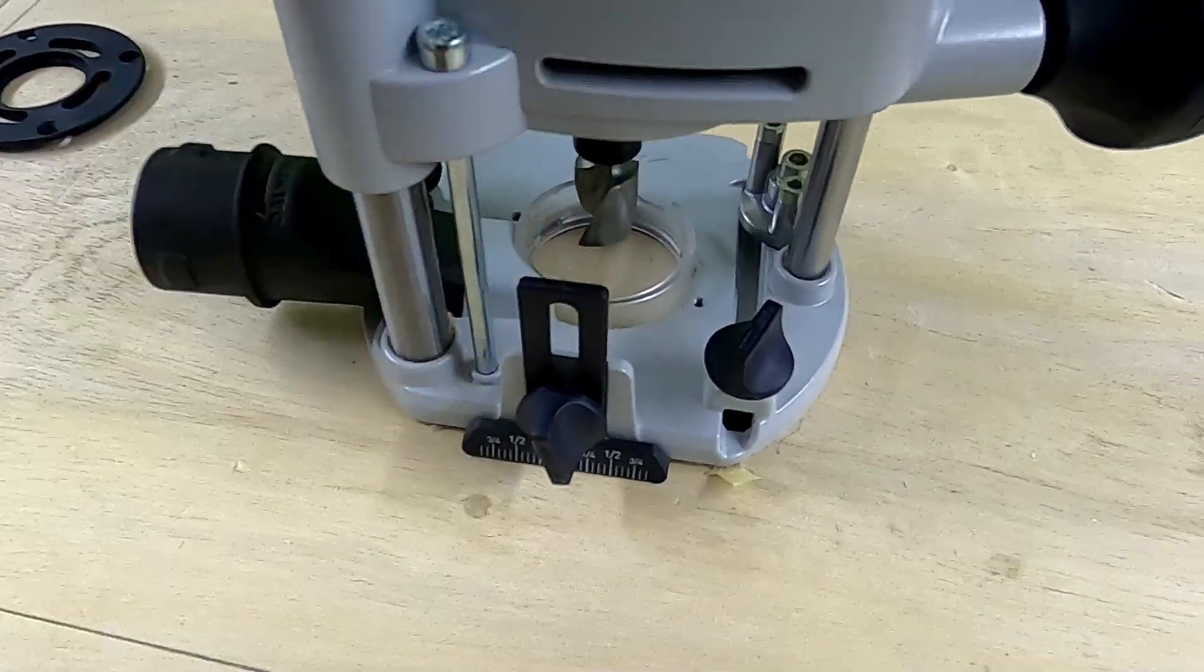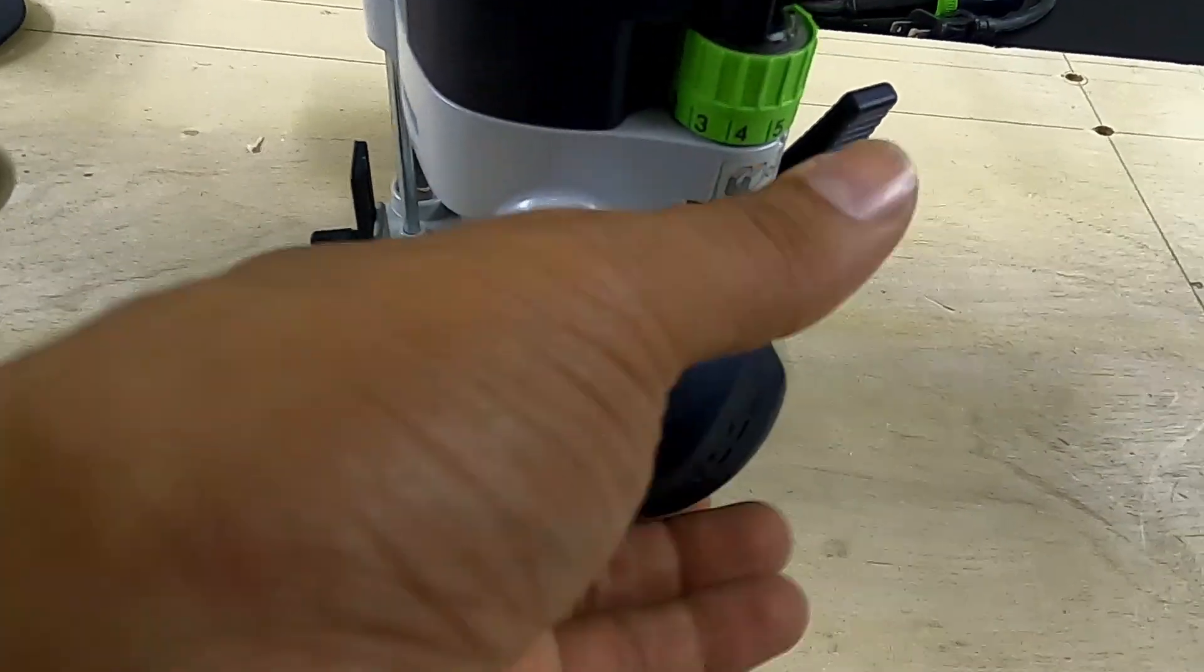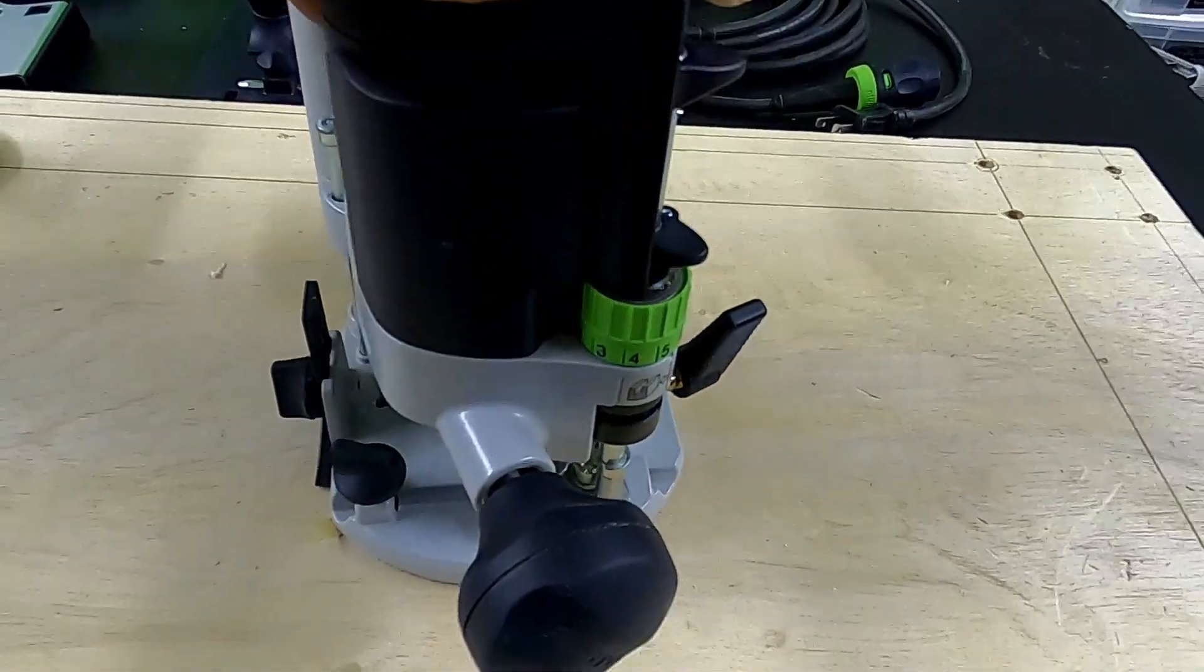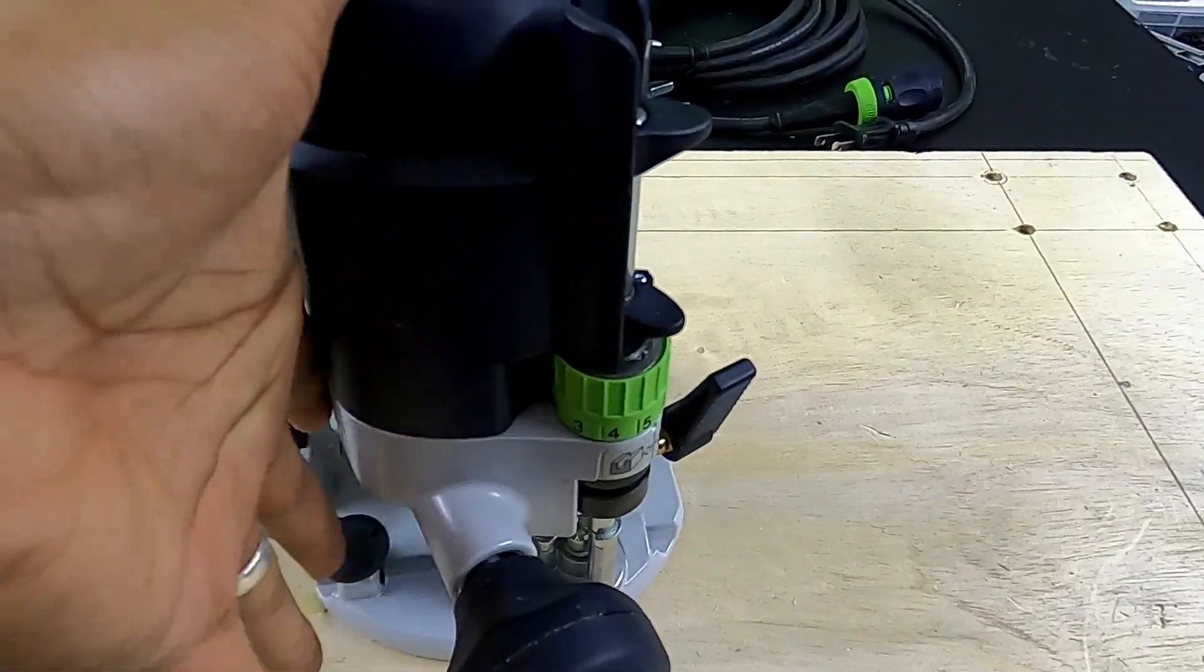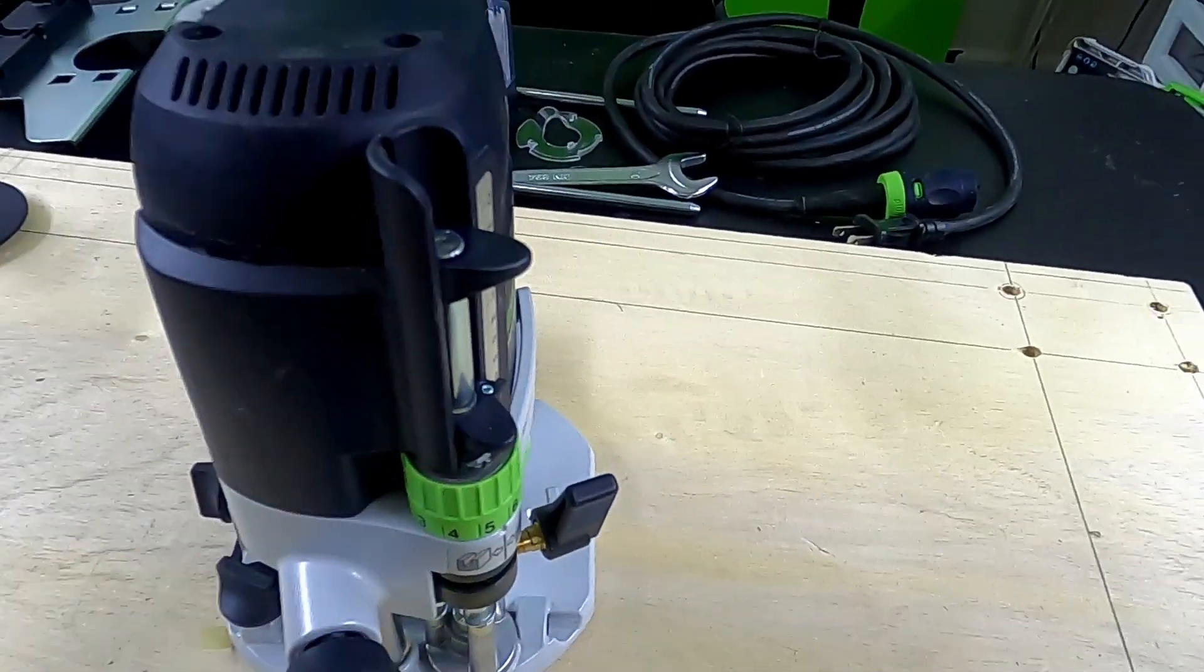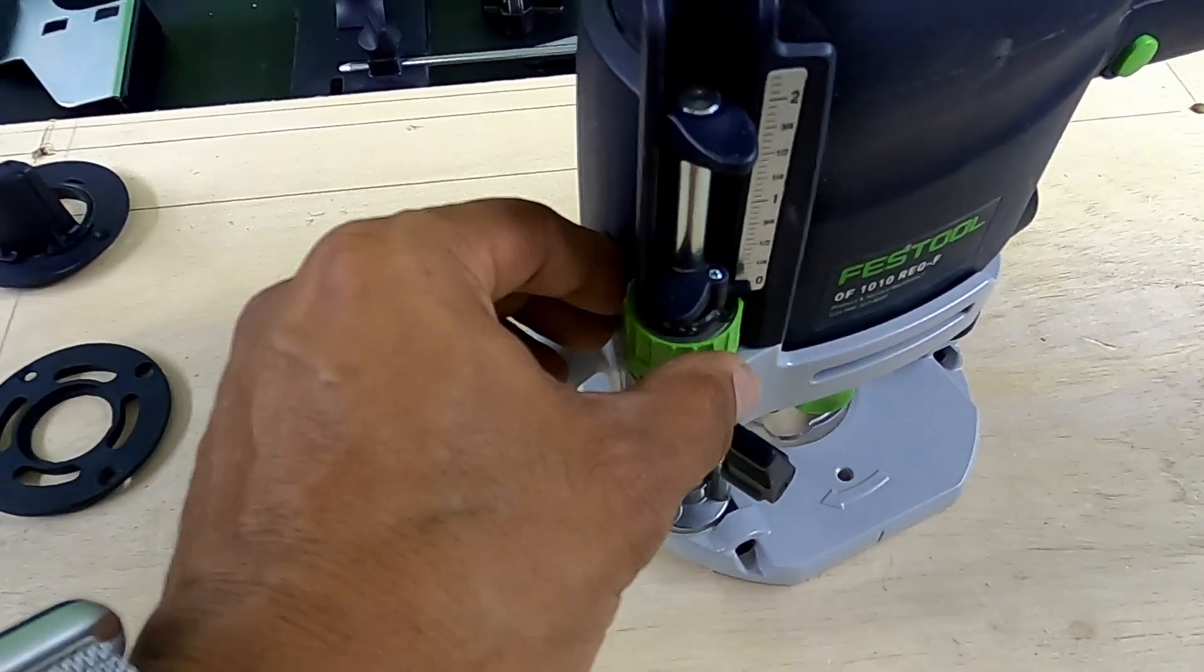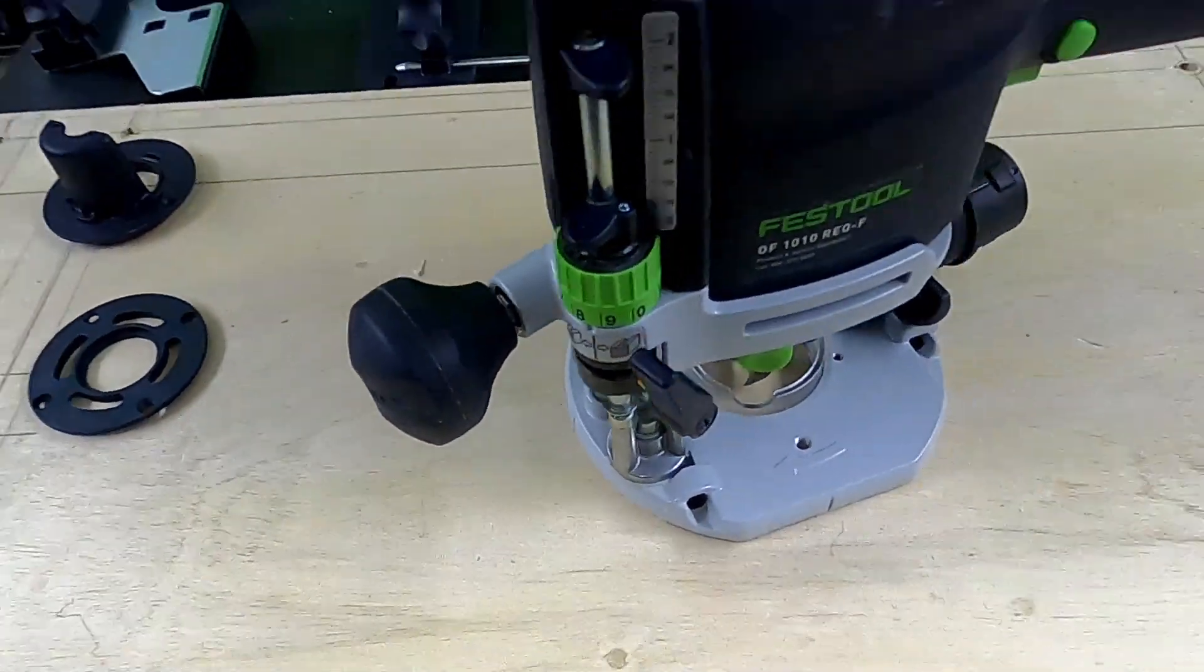You've got a knob here that you turn to depress the router, and if you turn it to lock it, it'll stay in place. You've got micro adjust on the router, which is great.